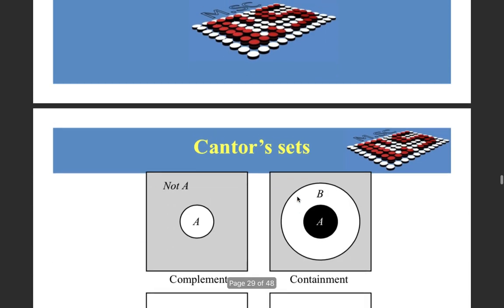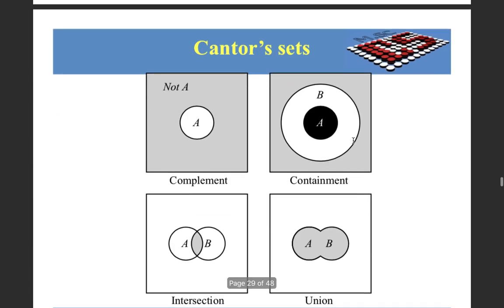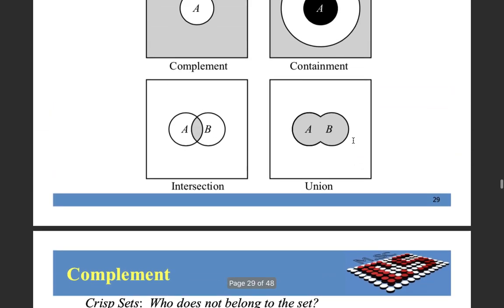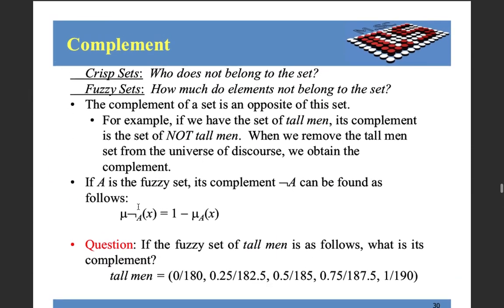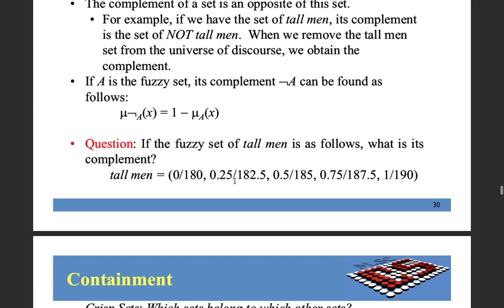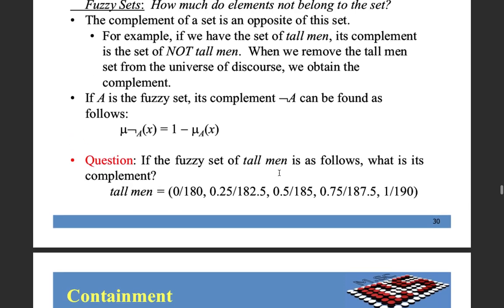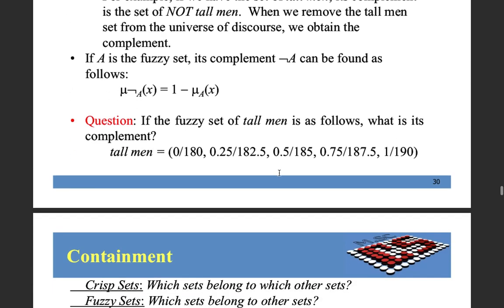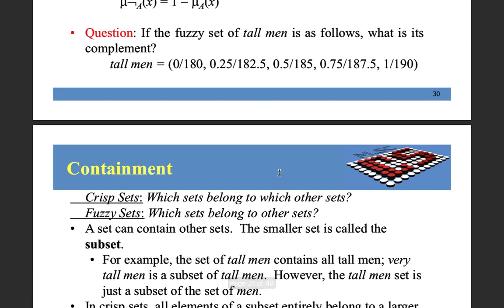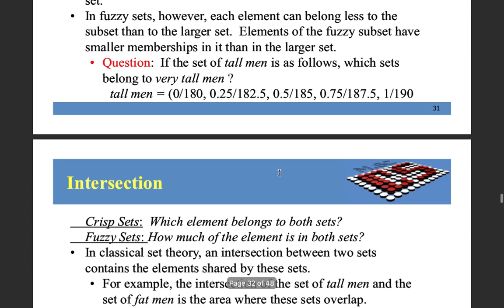So operations on fuzzy set, this is a little important because you should know how it works. Negation is nothing but membership function of not A is one minus membership function of A. Now in boolean, not of one is zero. We are playing in only zero and one, but in fuzzy set, we are playing in one to zero range. So fuzzy set forms an upper set universe for boolean set.